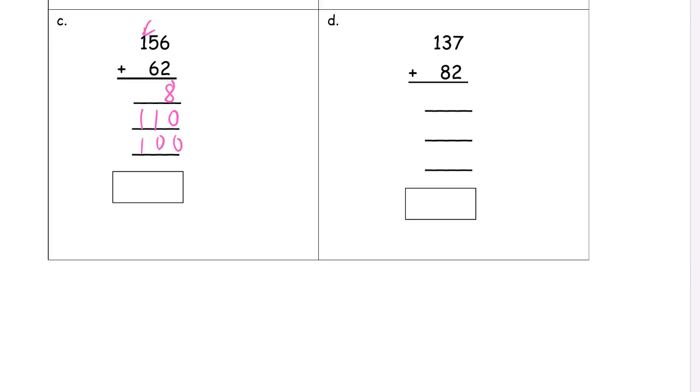We just have eight and zero and zero, which is eight. And one plus zero, which is one. And one plus one is two. That's it.